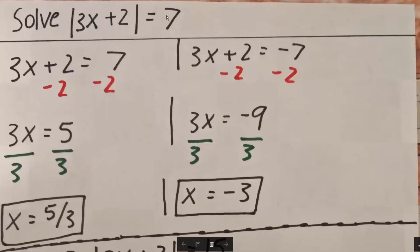In order to solve this problem, we need to split this up. So we get 3x plus 2 is equal to positive 7. And since we're dealing with absolute value, there's another answer: 3x plus 2 is equal to minus 7, because this right here is an absolute value.